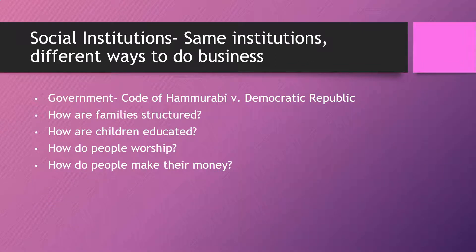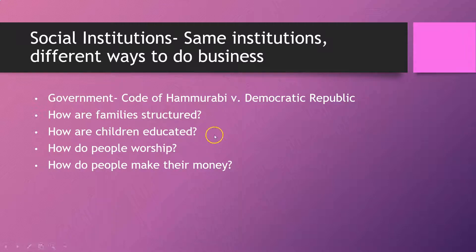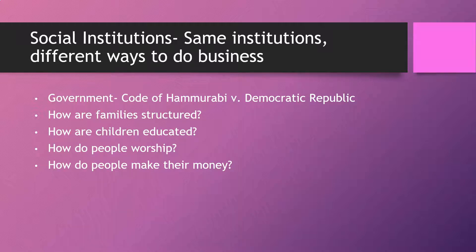Social institutions are the things people struggle with the most, so let me simplify: when life is good, these are strong; when life is bad, these are weak. These apply to all groups of people. How was their government? How were the family structures — was the man, the woman, or were they equally in charge? How were children being educated? How did people worship? Houses of worship are a social institution. And how are people making their money? Banks are social institutions. Essentially: how are these people running themselves, how are their families structured, how were children educated, how did they worship, and how did they make their money?